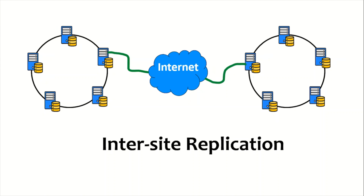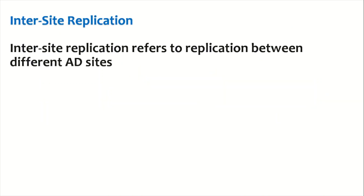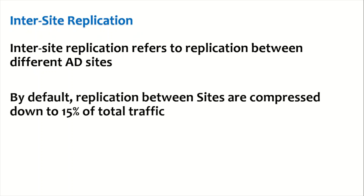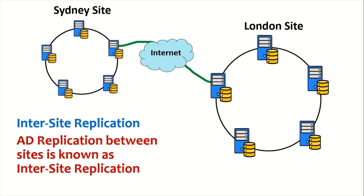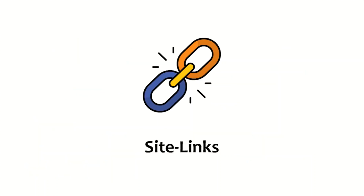The next topic is inter-site replication. Inter-site replication refers to replication between different active directory sites. By default, replication between sites is compressed down to 15 percent. So when we have a Sydney site and a London site, active directory replication between these sites is called inter-site replication.